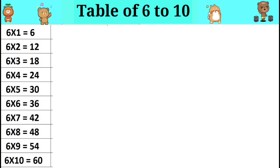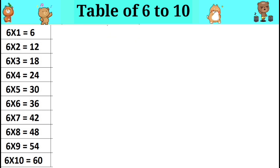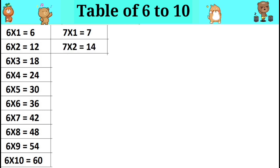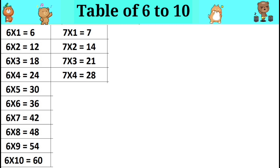Table of seven. Seven ones are seven. Seven twos are fourteen. Seven threes are twenty-one. Seven fours are twenty-eight. Seven fives are thirty-five.